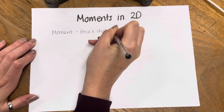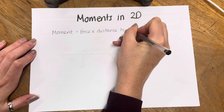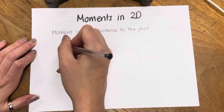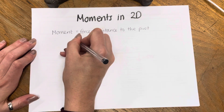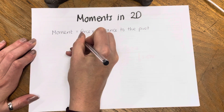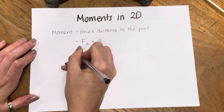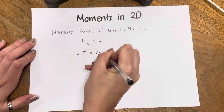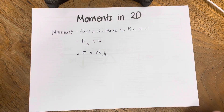There are quite a few caveats here. It's the distance to the pivot, and either the force or the distance have to be perpendicular to the pivot. So you can write it as the perpendicular force times the distance, or the force times the perpendicular distance. Usually in many problems you don't really have to worry about that because they are already perpendicular.